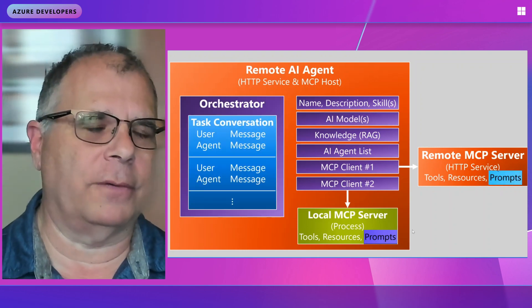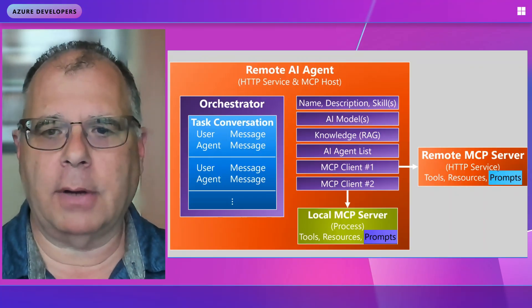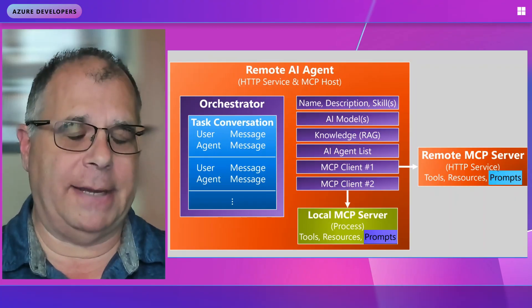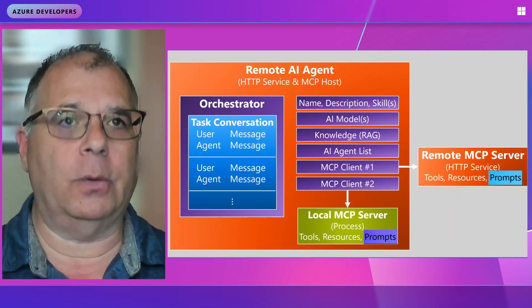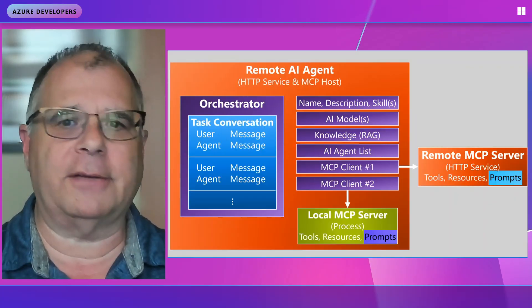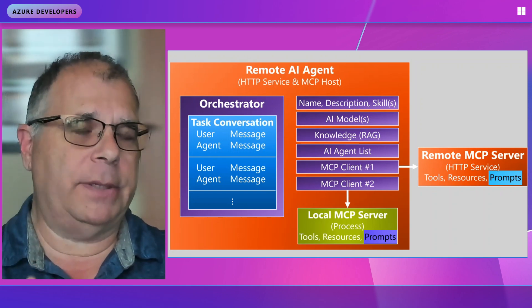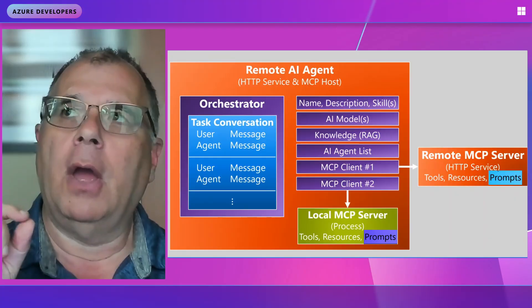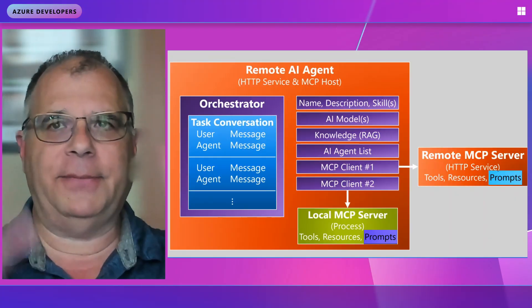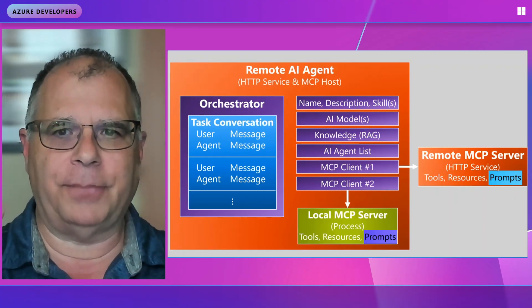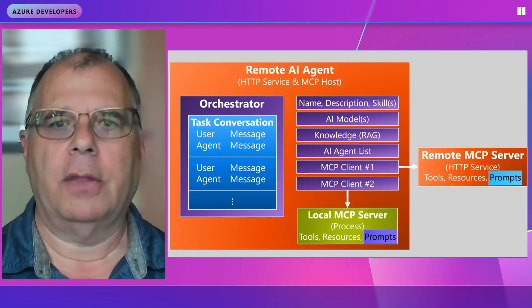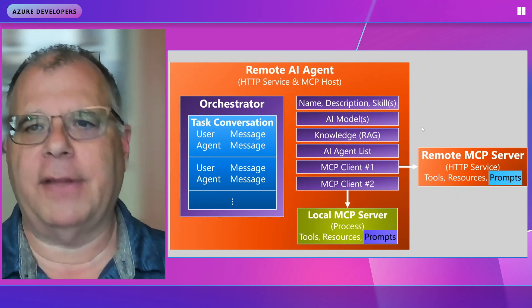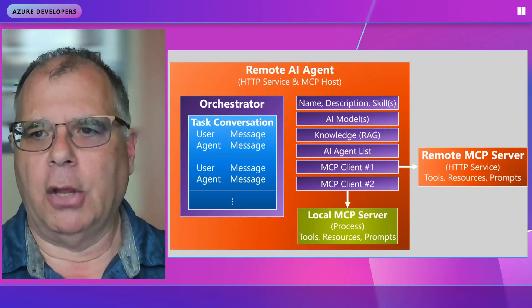Finally, MCP servers also have prompts available. This is another way to add grounding — the MCP server tells an agent about named prompts it knows about. The agent can present these to consumers, saying 'these are things I know how to do.' A human might fill in a couple pieces of information, like the path to a log file and a timestamp range. The MCP server returns a full prompt to the orchestrator, which includes that query, sends it to the AI model, and the model returns a response. Those are the core features.